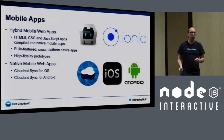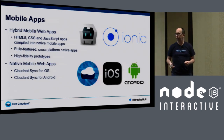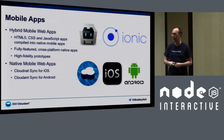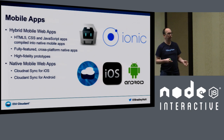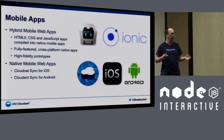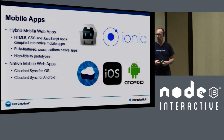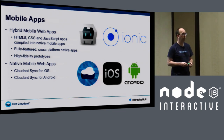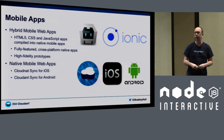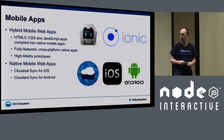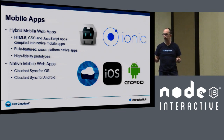For mobile apps, if you're building hybrid apps using Cordova, PhoneGap, or Ionic — tools where you use HTML5, CSS, and JavaScript tooling and compile to run as a native app — you can also run PouchDB in this environment and use it as the database for your native app. This is great for creating fully featured cross-platform native apps.